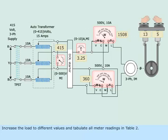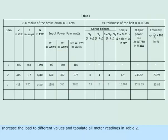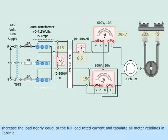Increase the load to different values and tabulate all meter readings in Table 2. Increase the load nearly equal to the full load rated current and tabulate all meter readings.